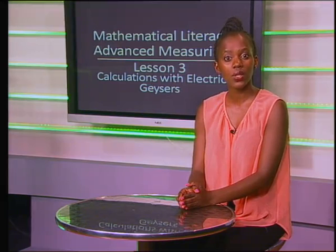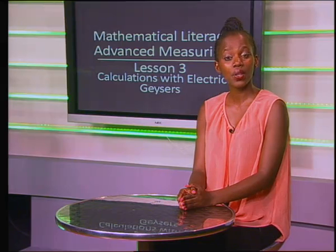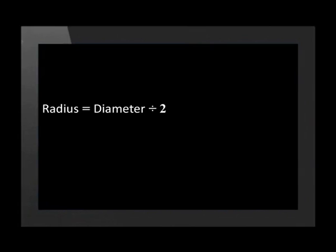The contractors want to calculate how much insulation material they will need for one geyser. Here is the net of the hot water cylinder, which is used as a pattern for the insulation blanket. We need to determine the measurements in meters squared of the surface area of the cylinder. The net gives only the measurement for the diameter and not the radius, but we know that the radius is half of the diameter.